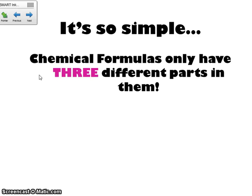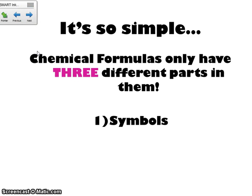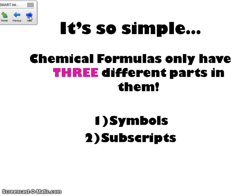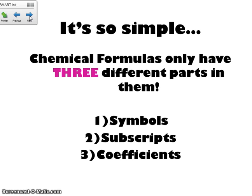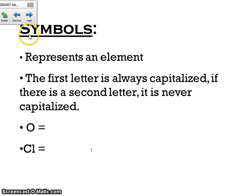There are three simple parts to writing chemical formulas. First one: symbols. Second one: subscripts. Third one: coefficients. I'm going to walk you through those three things here, and then you're going to have some time to practice them at the end of the hour.